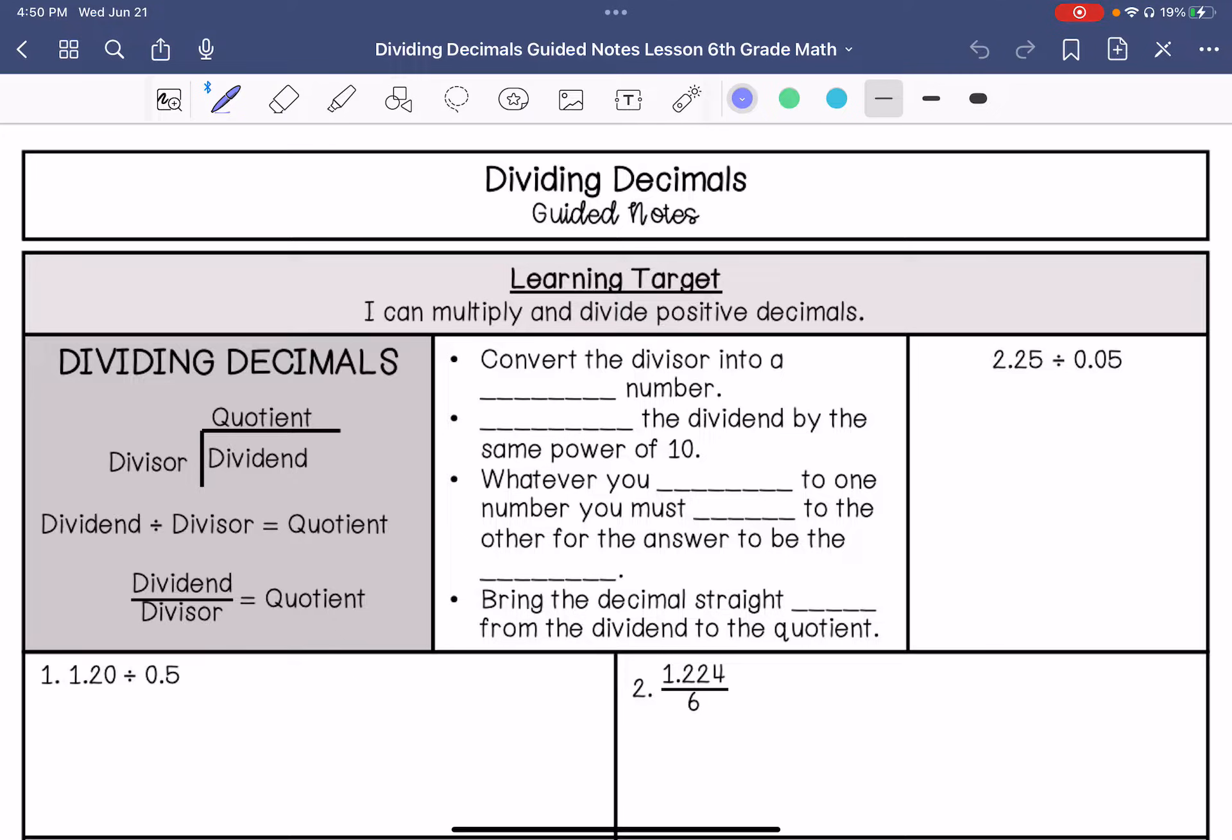Before we go over the steps to divide decimals, it's important that we know how to write these division problems. Most of the time you will see it written this way, and it's important to know that the dividend, the number that's being divided, goes on the inside of this little house. Your divisor, the second number, is going to go on the outside, and then quotient is your answer. Sometimes it's written like this, and if it's written as a fraction, your dividend's on the top, your divisor's on the bottom, and your quotient is the answer.